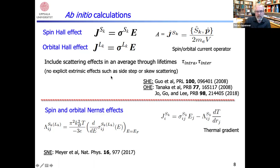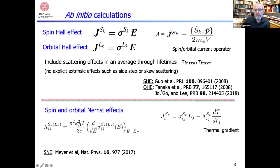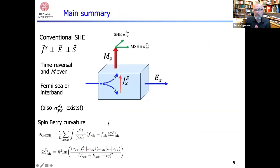We include scattering effects through an intra-band and inter-band lifetime, but we do not take into account extrinsic effects such as side-jump or skew scattering. This formalism was done by Guo et al. for platinum and by Tanaka et al. for the orbital Hall effect. We can also calculate spin and orbital Nernst effects, given by a thermal gradient and the Mott expression with a derivative of the spin or orbital conductivity tensor.